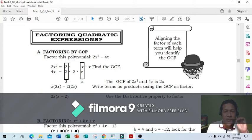Factor this polynomial: 2x squared minus 4x. So we write 2x squared, next is 4x. What are the factors of 2x squared? These are the factors: 2 times x times x.